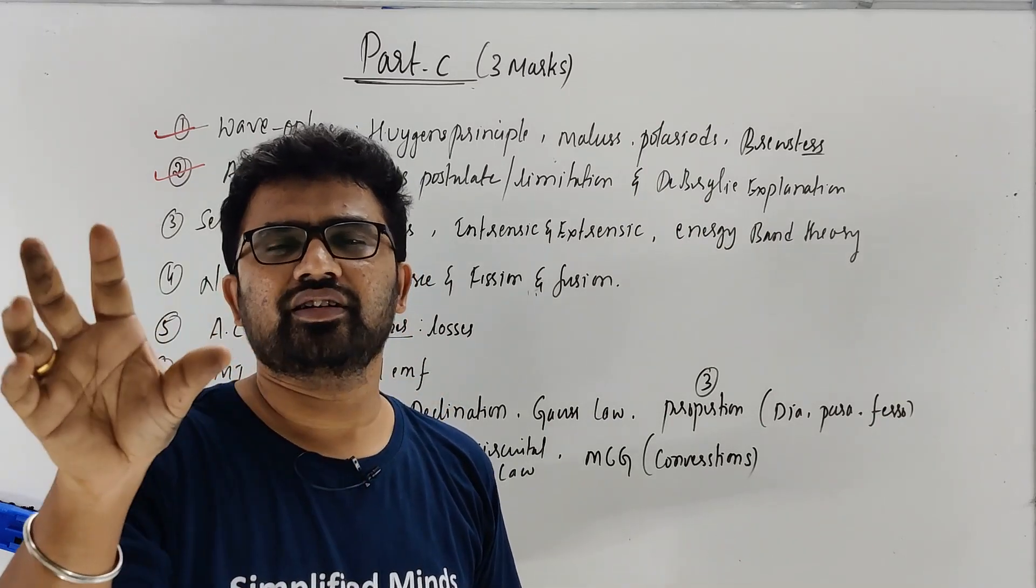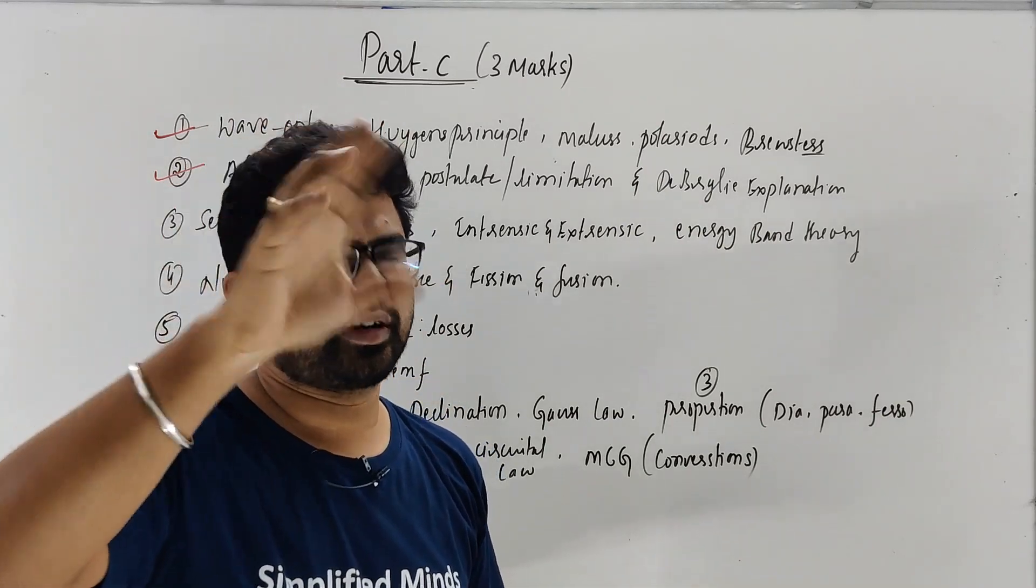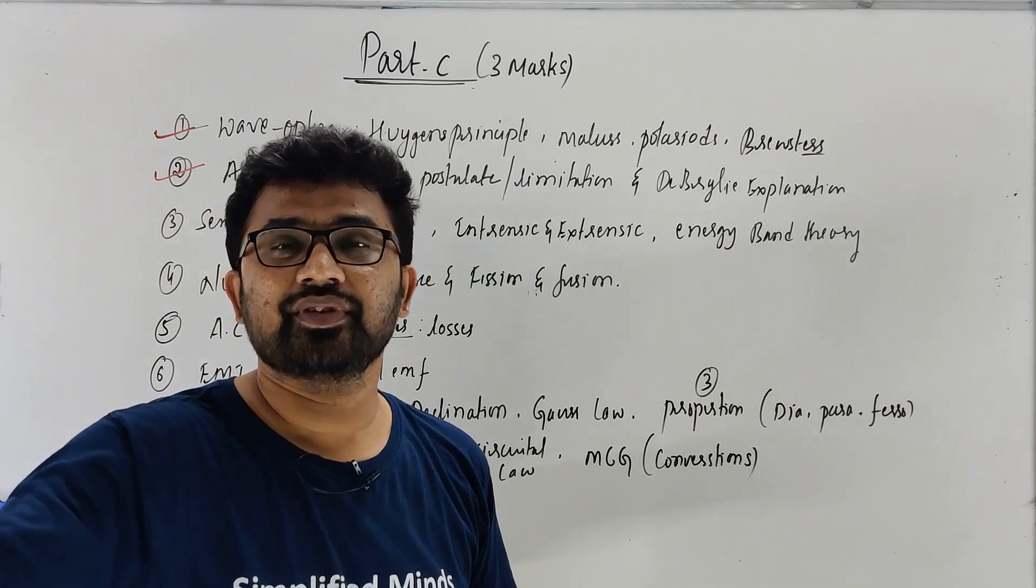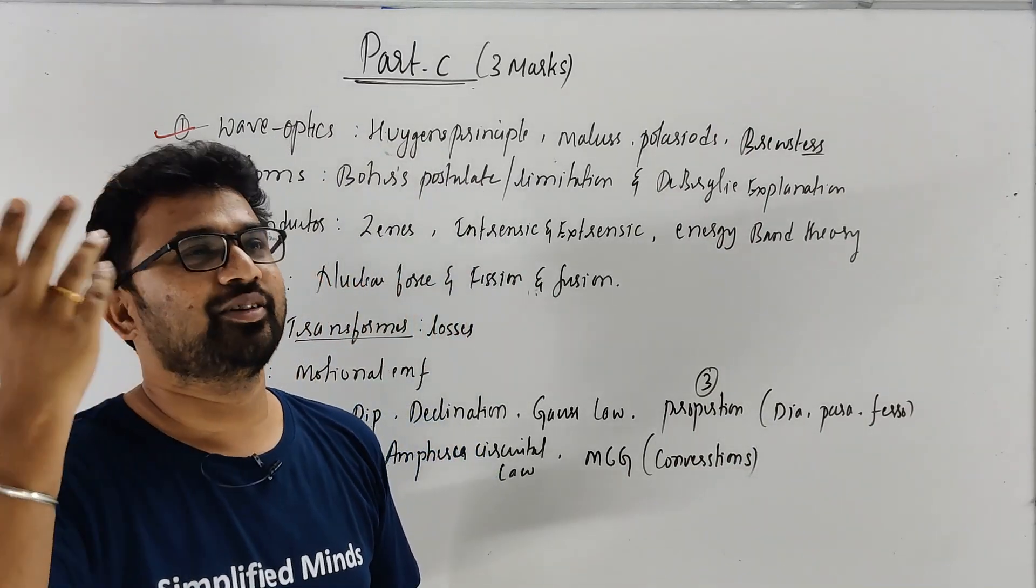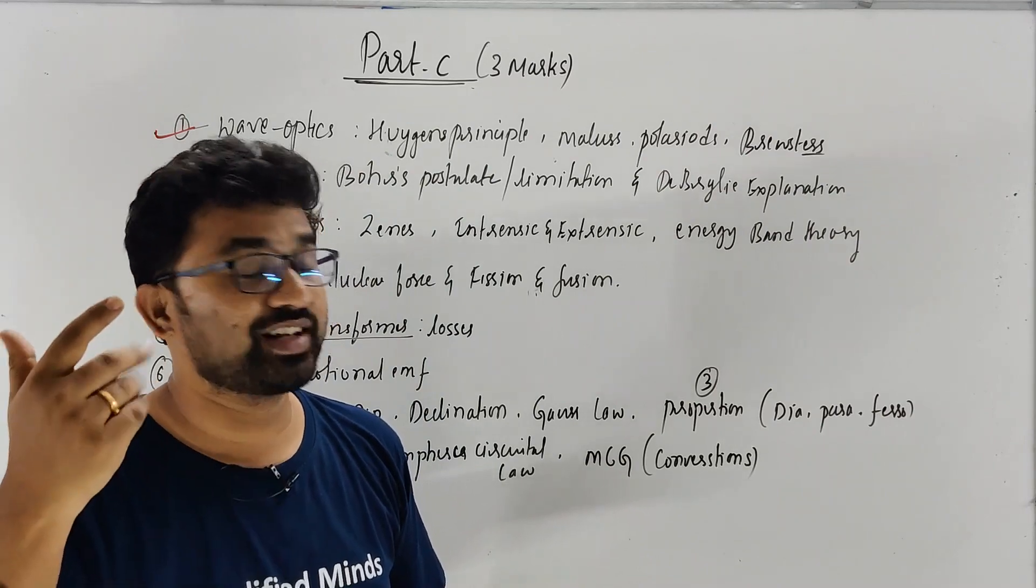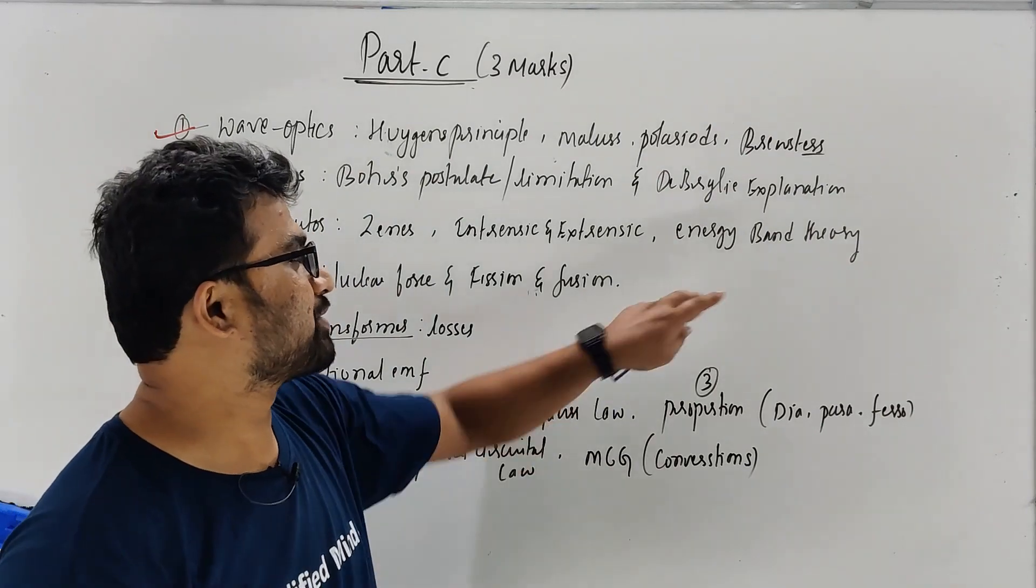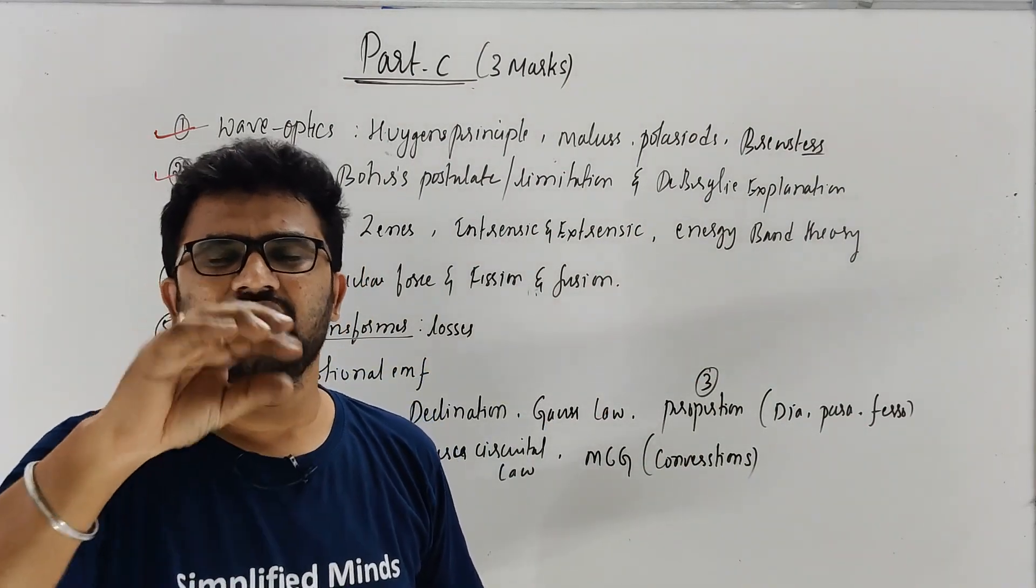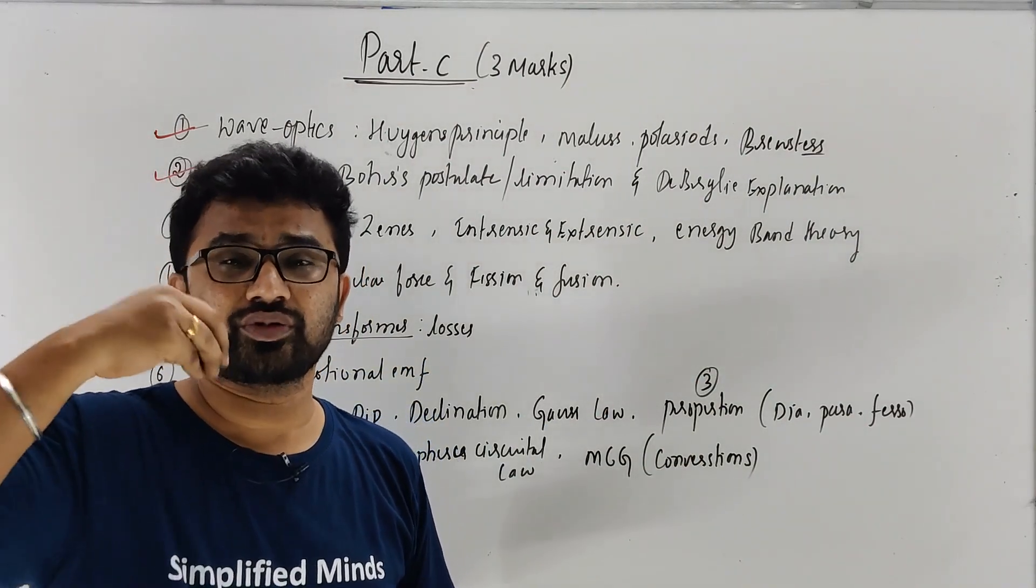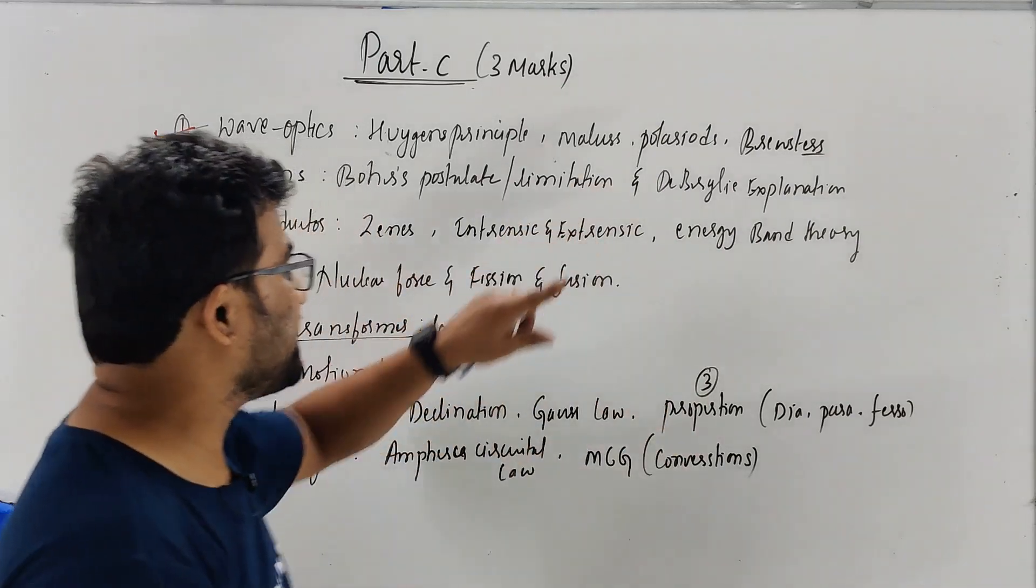Usually Zener diode is called voltage regulator. Instead of extrinsic, intrinsic differences. If you are electronics student, you can see it already. And energy band here is simple. Conduction, conductor, non-conductor. Conductor, insulator. Not slept. Conductor, insulator and then one more. Just the three differences. The explanation is very easy. So this is an easy topic.